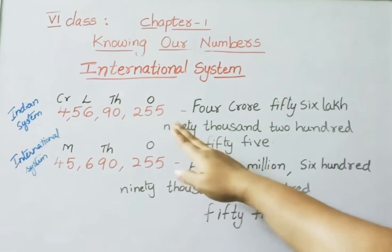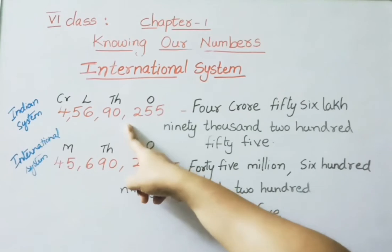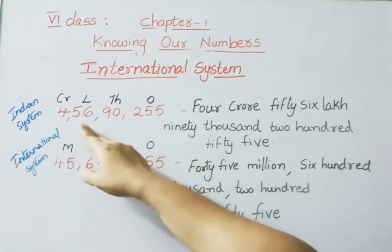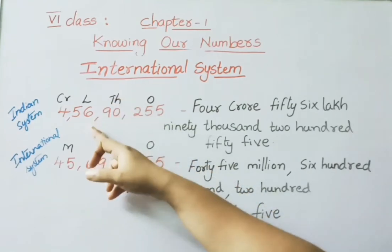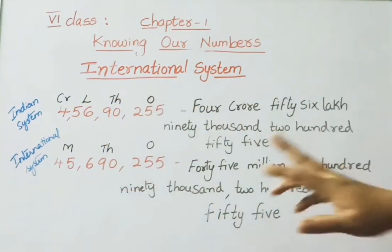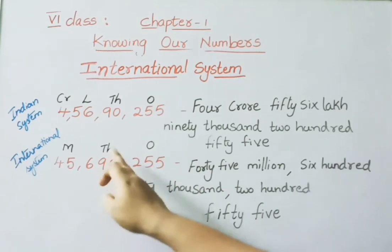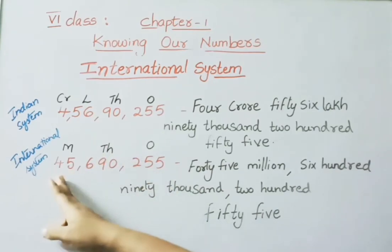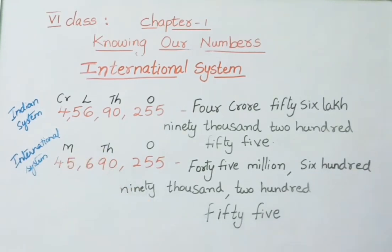In the Indian system we separate the first three digits by a comma, then after that two digits at a time. So the next two digits come under the thousands period, the next two digits under the lakhs period, then crores. But in the International system, three digits at a time are separated by commas — the first three under the ones period, the next three under thousands, and remaining digits under millions.